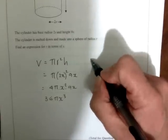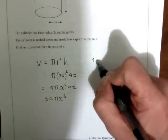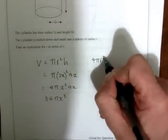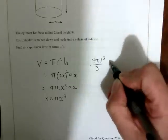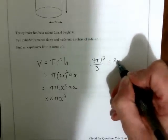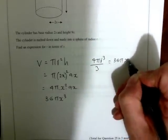Now if this is melted into a sphere, the formula for a sphere is 4πr³/3, which equals 36πx³.